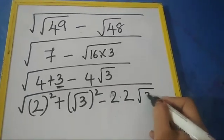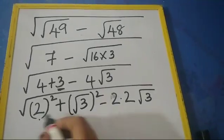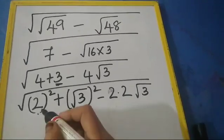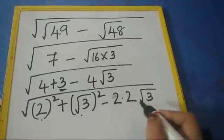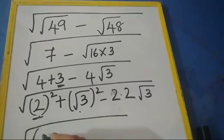root 3. Now you see what is there: a² + b² - 2ab. So what is this formula? a minus b whole square. So we will write this as square root of, what is a here? a